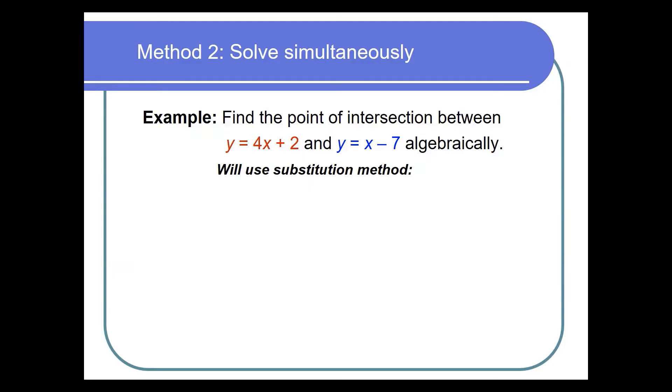Now we'll look at the second method, solving this simultaneously. So again the same question. We want to find the point of intersection algebraically this time between the two lines y = 4x + 2 and y = x - 7. The method that I will use in this case is the substitution method.